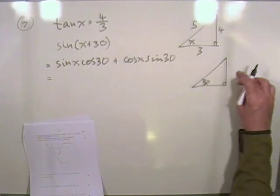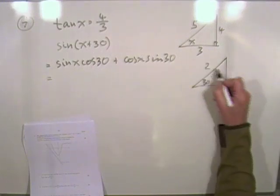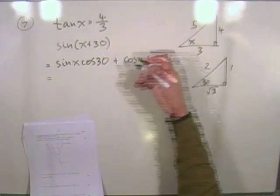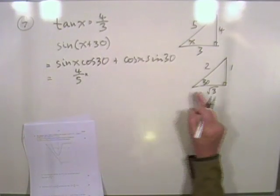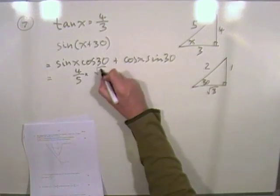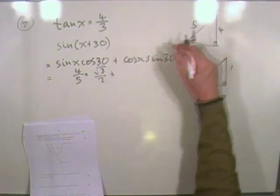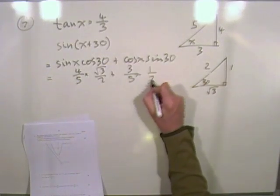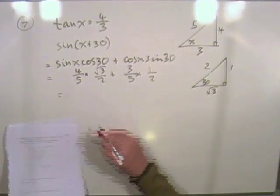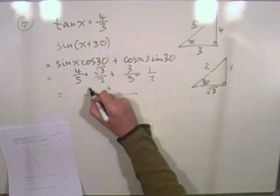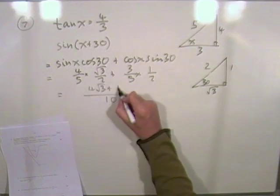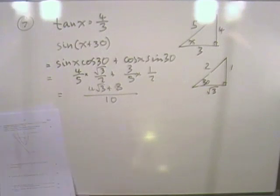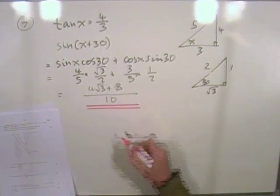Right, sine of x from this triangle, 4 fifths. Cos of 30, root 3 upon 2. Cos of x, 3 fifths. Cos of 30, 1 upon 2. They're both over 10, so just add the numerators. 4 root 3 plus 3. And that was it. That's all you had to show. That went done.